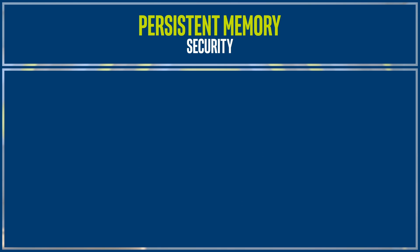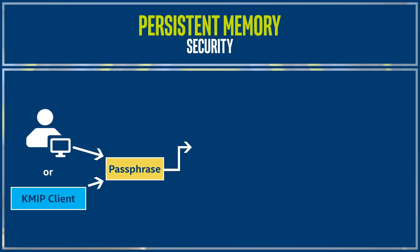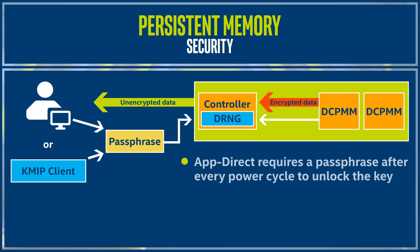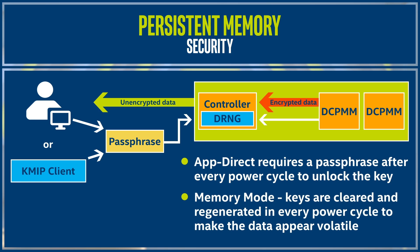In terms of security, data in Intel Optane DC Persistent Memory is protected at all times with XTS AES-256 encryption, with the key safely stored in the controller of each module. For AppDirect, a passphrase is required after every power cycle to unlock the key. In memory mode, keys are cleared and regenerated on every power cycle to make the data appear volatile.